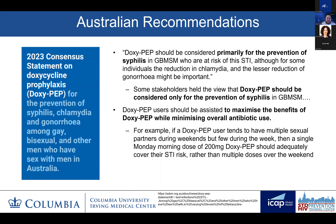In Australia, the guidelines focus on DOXYPEP primarily for the prevention of syphilis, and also recommend strategies to maximize benefits while minimizing overall antibiotic use. For example, if a DOXYPEP user tends to have multiple sexual partners during weekends but few during the week, a single Monday morning dose should adequately cover their STI risk rather than multiple doses over the weekend.